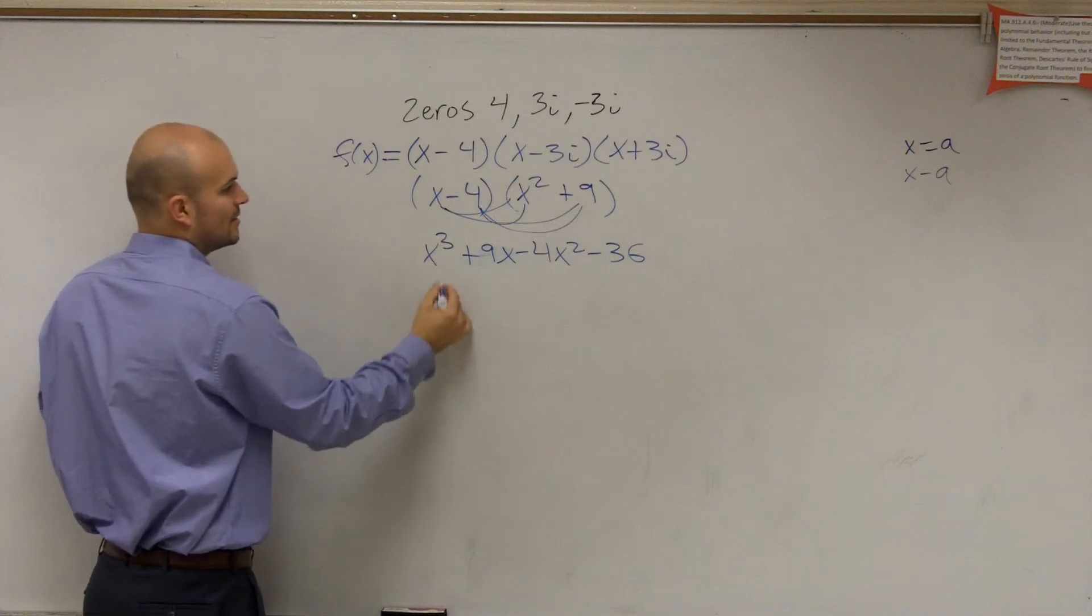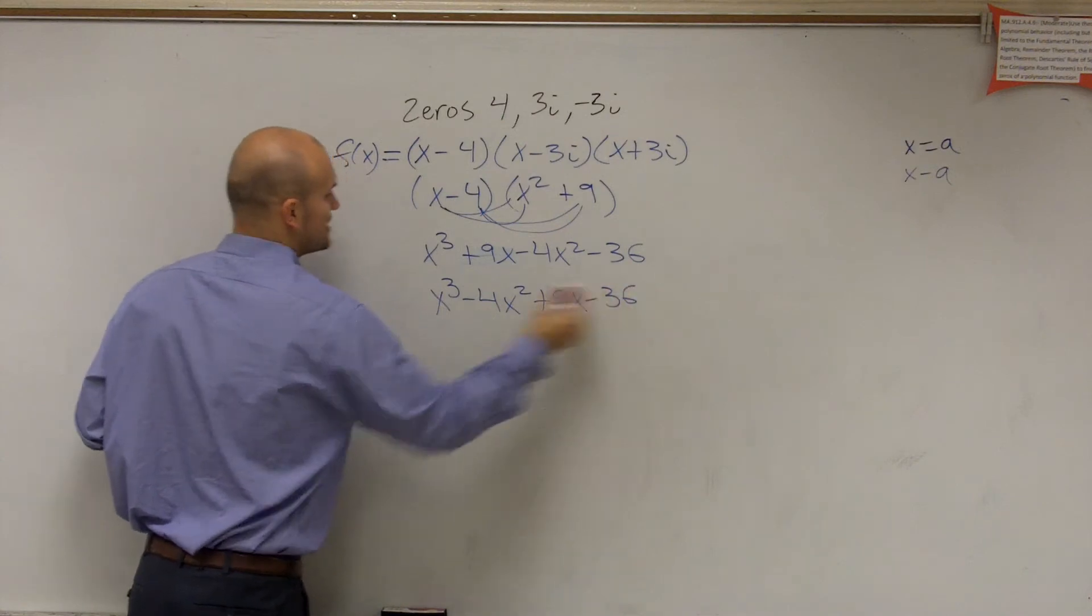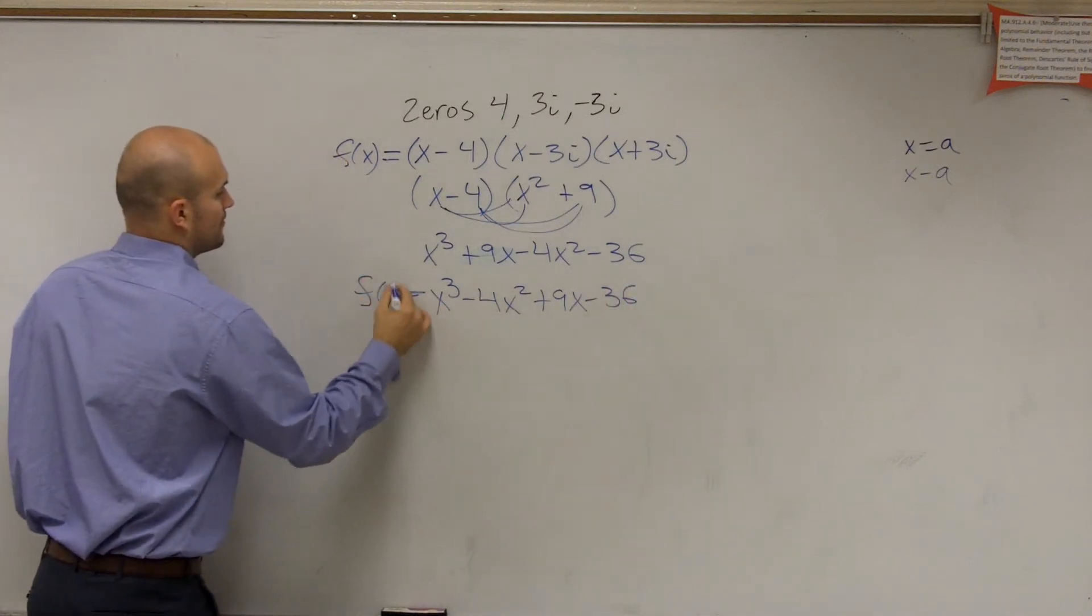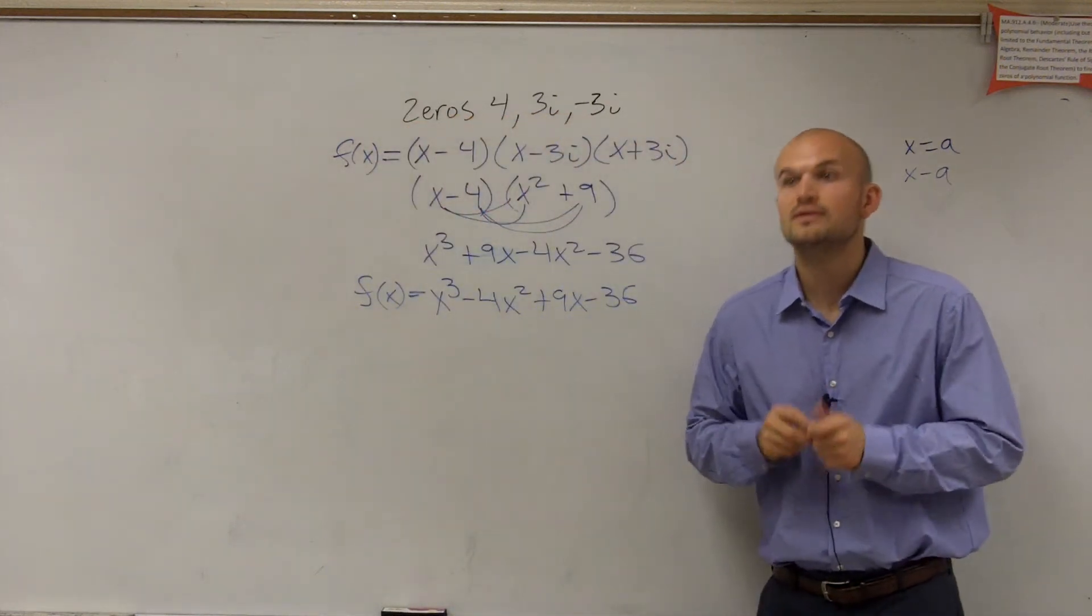Let's rewrite it in descending order. x cubed minus 4x squared plus 9x minus 36 equals f of x. Any questions for what we did?